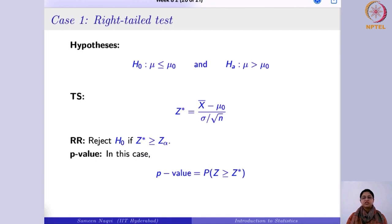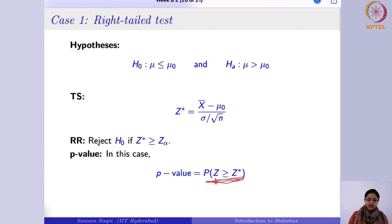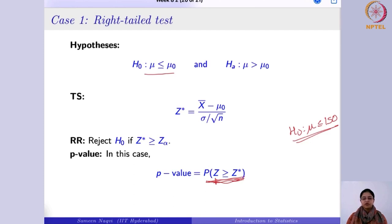In the p-value approach, the p-value is the probability that you would observe a more extreme statistic than we did if the null hypothesis were true. Here, P(Z > z*) gives the probability that, given the null hypothesis is true — meaning the average height of Indian women is ≤ 150 — you would observe a statistic more extreme than z*. If this probability is small, it suggests the result is unlikely under the null hypothesis.